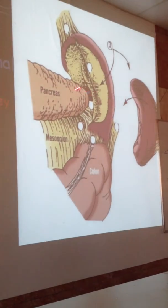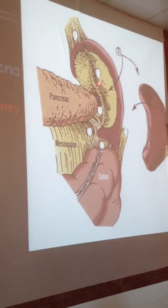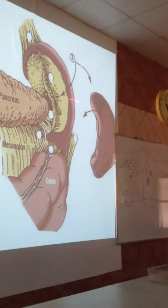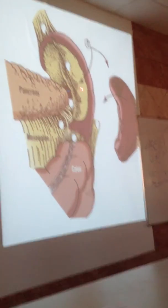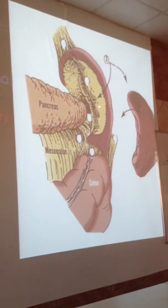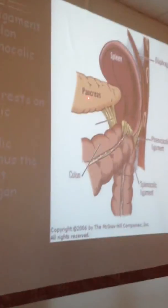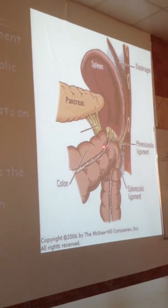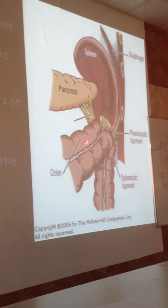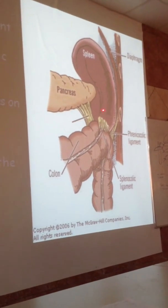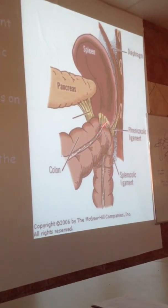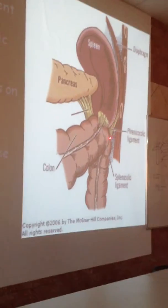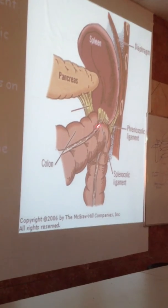The splenorenal ligament connects the spleen with the left kidney. There is also another ligament that connects the spleen with the colon at the region of the left colic flexure, called the splenic-colic ligament. The spleen rests on the phrenicocolic ligament and the left colic flexure.